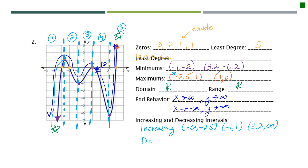For the decreasing intervals, since we used sections one, three, and five for increasing, sections two and four are decreasing. Interval two starts decreasing at about negative 2.5 and stops at negative 1. Interval four starts at 1 and stops decreasing at about 3.2.